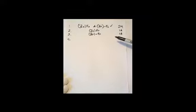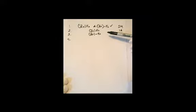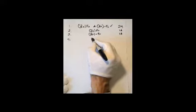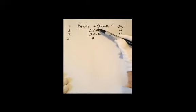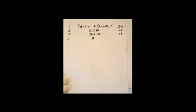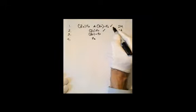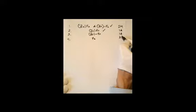Now we have two existentially quantified sentences and we have to decompose them both. We'll do line two first. We instantiate to a constant that does not yet appear on the branch. There are no constants on the branch so far — only x's — so we can pick any constant. By convention we pick the first letter of the alphabet, so we write down F(a), check it off, and note it came from line two by existential decomposition.